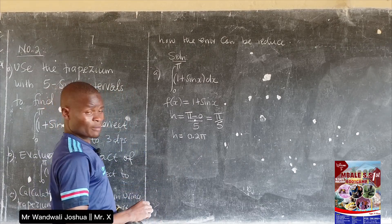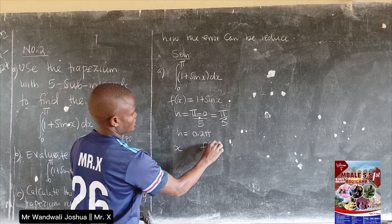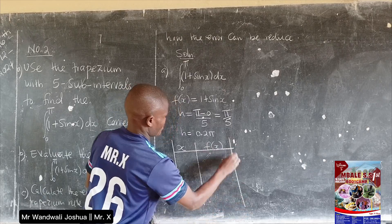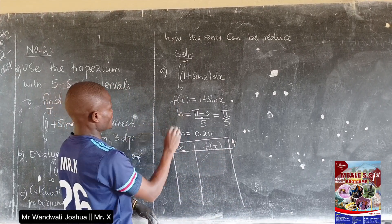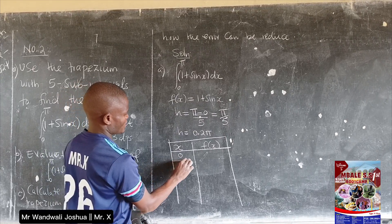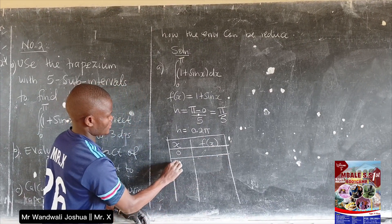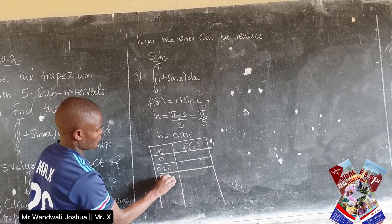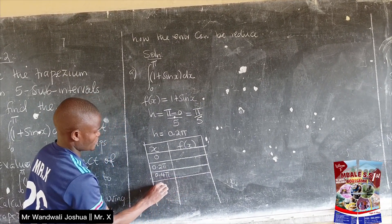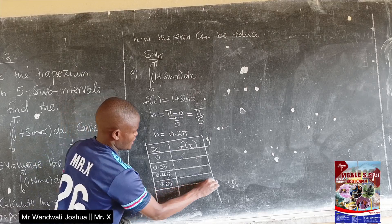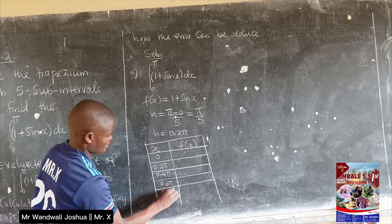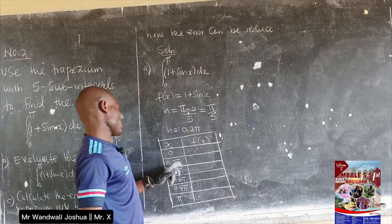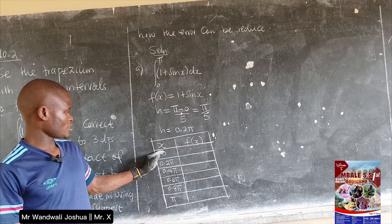We now build our table with columns for x and f(x). Starting from x = 0, we keep adding h = 0.2π to get: 0, 0.2π, 0.4π, 0.6π, 0.8π, and finally π. This confirms that adding equal intervals from the start brings us to the last value.